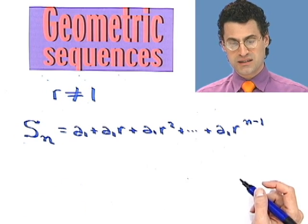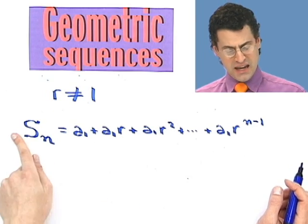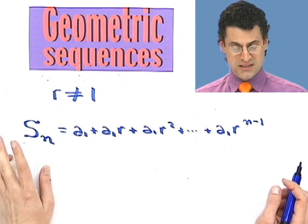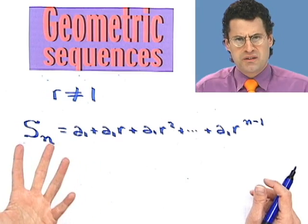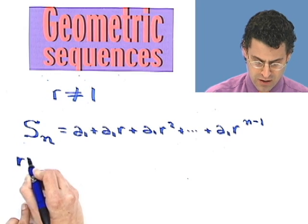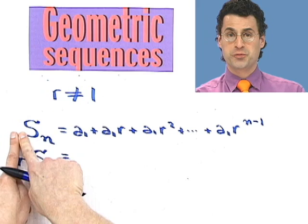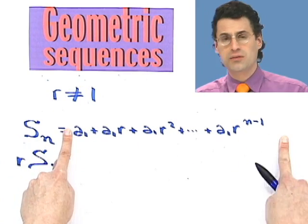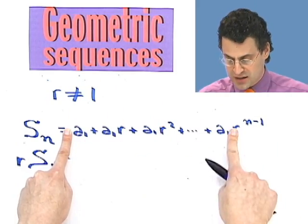Watch what happens when I take this sum and multiply it by r. I'm trying to figure out what s sub n is, trying to solve for s sub n. But I'm going to instead multiply everything through by r. Now this is a trick — there's no reason why this should obviously do anything for us. On the left side I get r times s sub n. On the right-hand side, I've got to distribute r: r times each term.